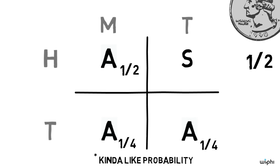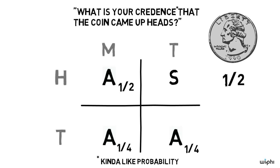If only it were that easy. If you look closely at the graph, you'll see that there are three awakenings in total. Two of those awakenings take place if the coin comes up tails, but just one takes place if the coin comes up heads.